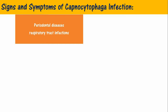Signs and symptoms of Capnocytophaga infection: Capnocytophaga bacteria are involved in different types of infections. Infections manifest in both immunocompromised and immunocompetent patients, but the severity depends on the immune status of the patient. Infections in the human oropharyngeal tract can manifest as periodontal or gum diseases, and respiratory tract infections, including infections of the mouth, nose, throat, and lungs.